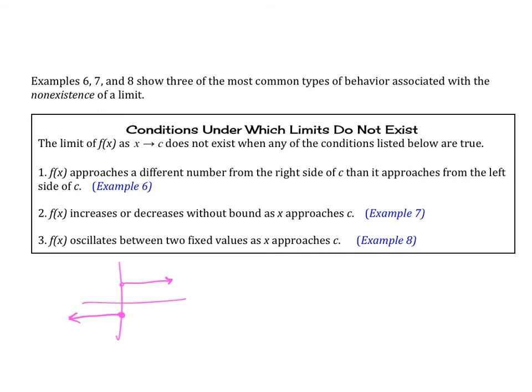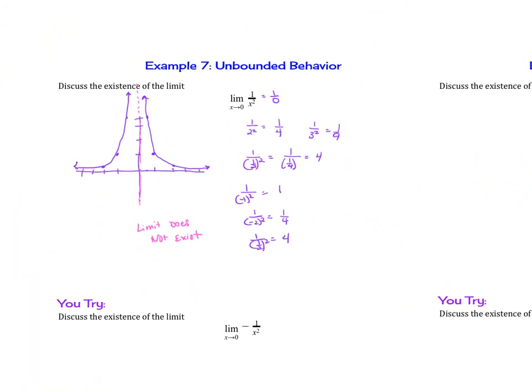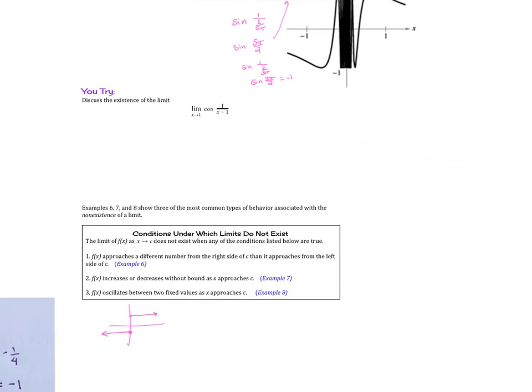For number 7, f of x increases or decreases without bound. So here, it increases without bound here to the left and to the right. So it's not approaching a single value of c. So therefore, the limit does not exist.